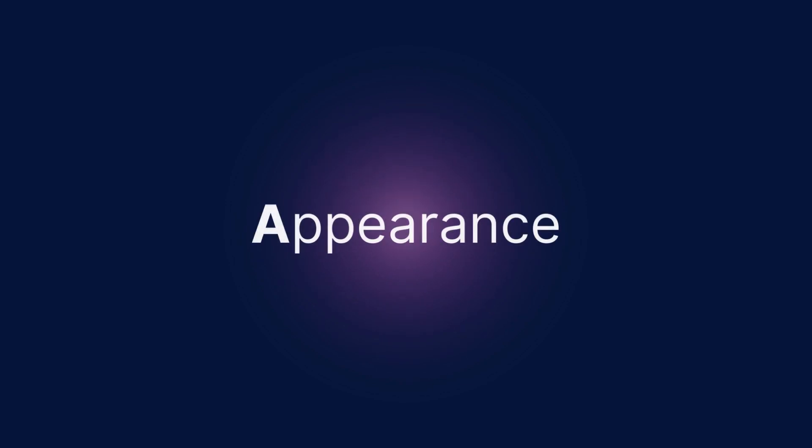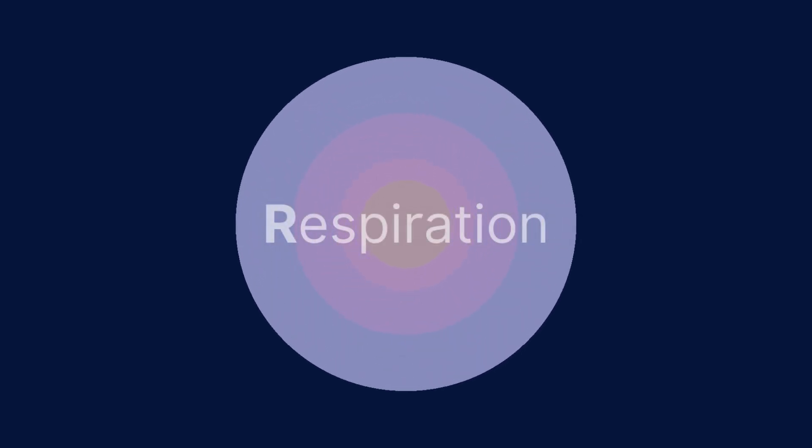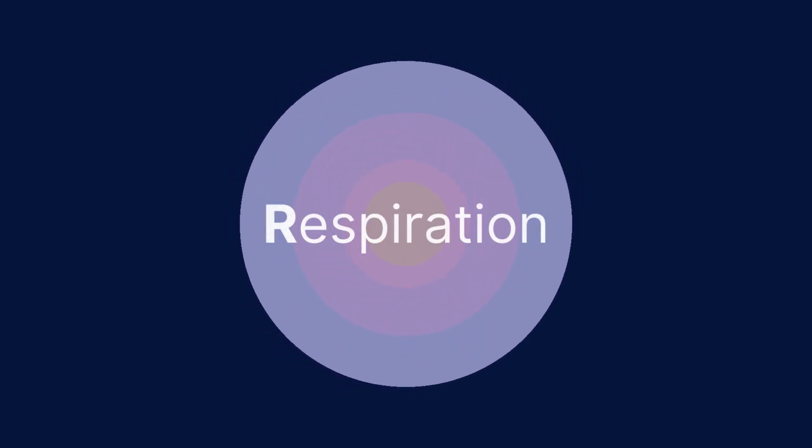Next is Appearance — focus on the extremities and check if they are pink or have more of a blush colour. And lastly is R, Respiration — look at the rise and fall of the chest, or listen well to the sound of their breathing or crying.